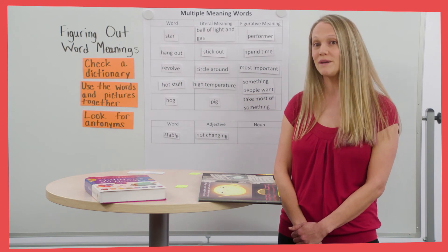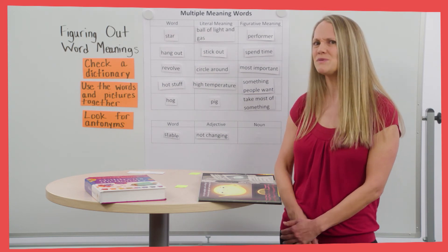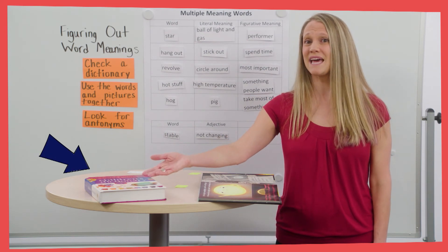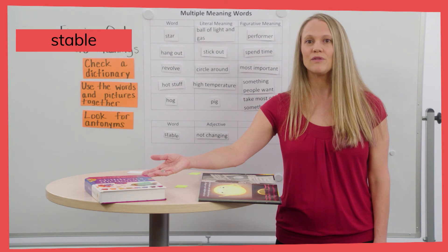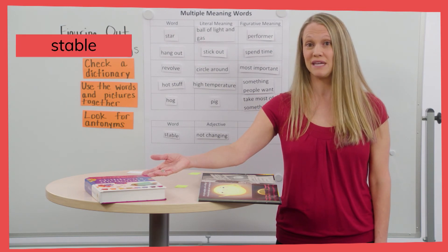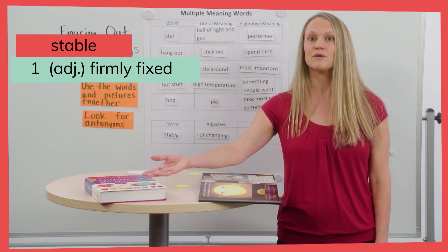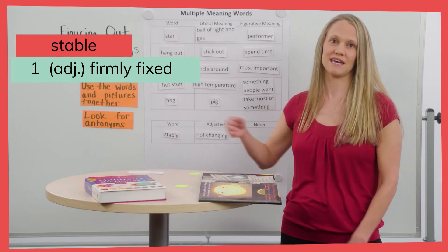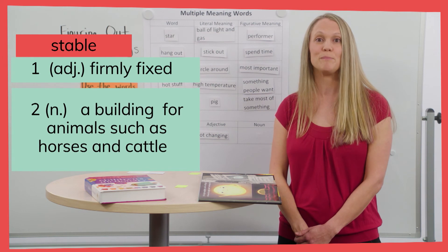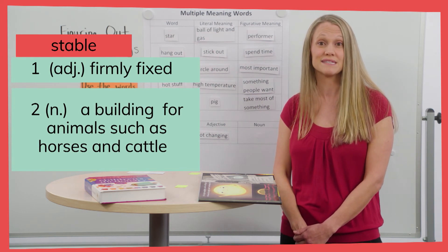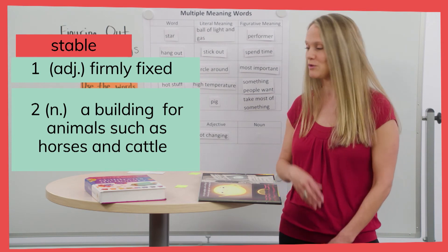So now we know one meaning, but how can we figure out the other one? I think we're going to have to use the dictionary since using the text will only teach us about the meaning we already found. When I look up stable, it says the adjective meaning is firmly fixed — the first definition we already figured out. And for the second definition, it's a noun that means a building for animals, such as horses and cattle. So the other thing that stable can mean is a place where an animal lives.